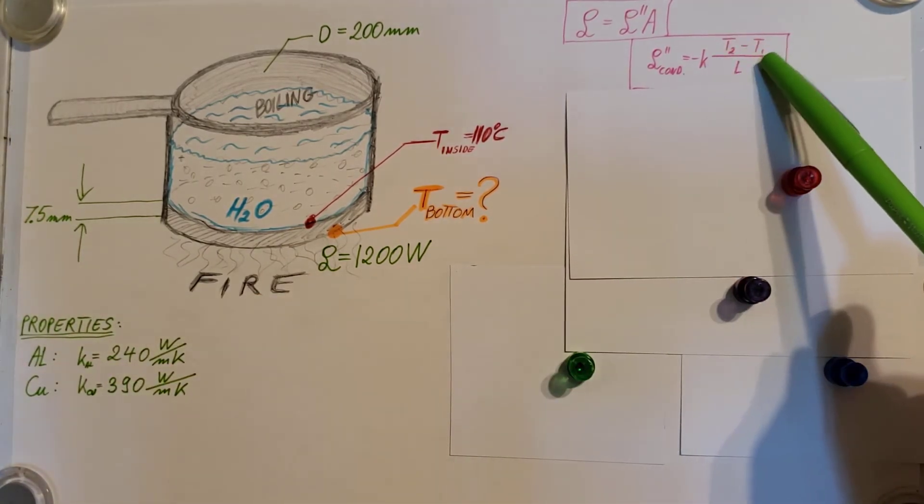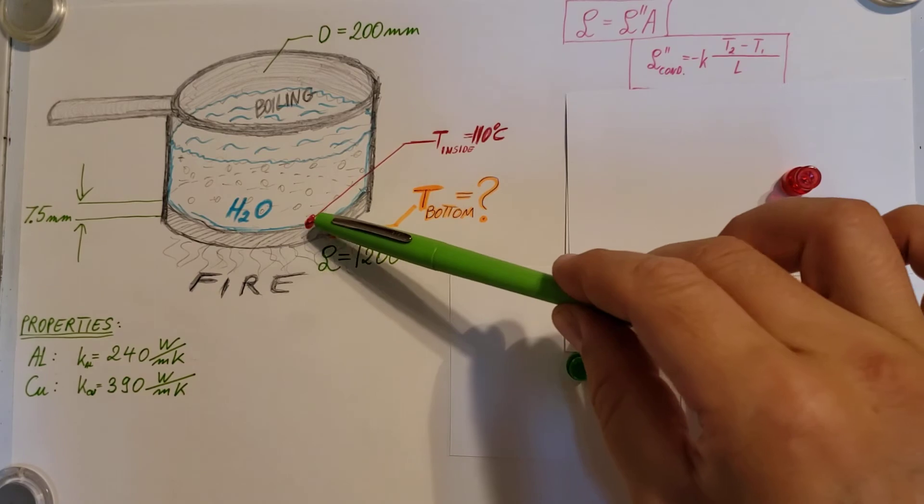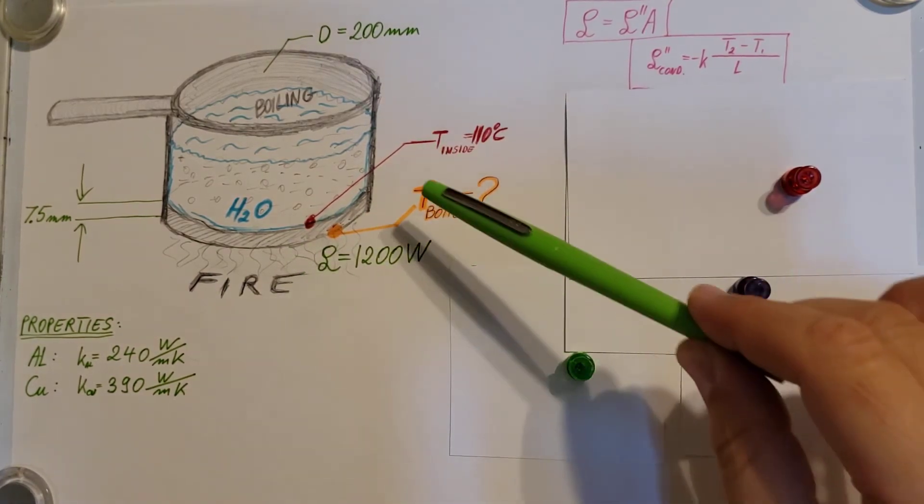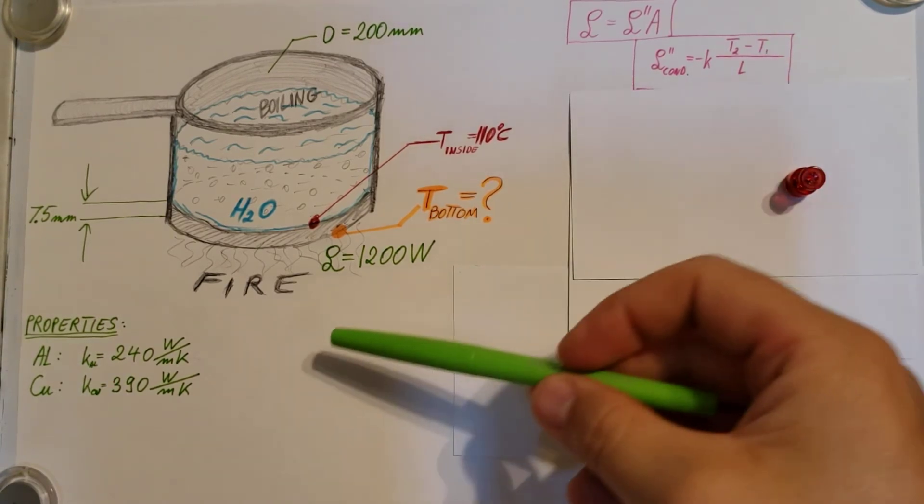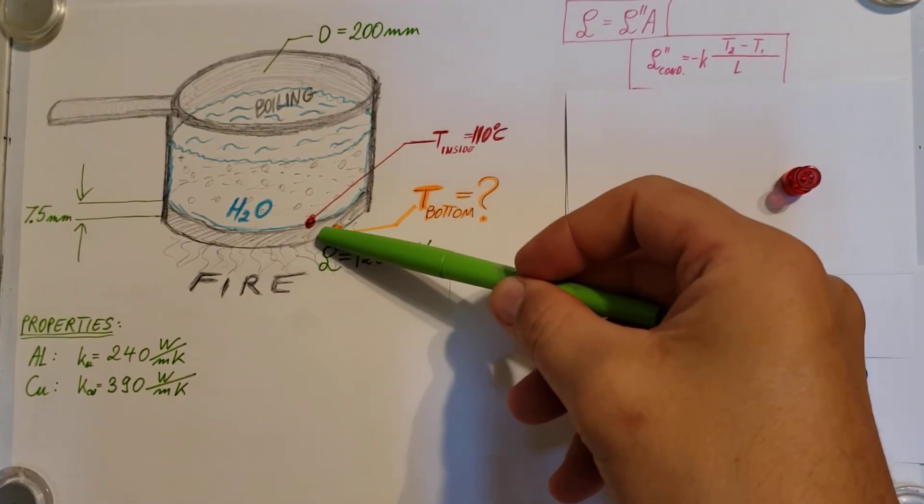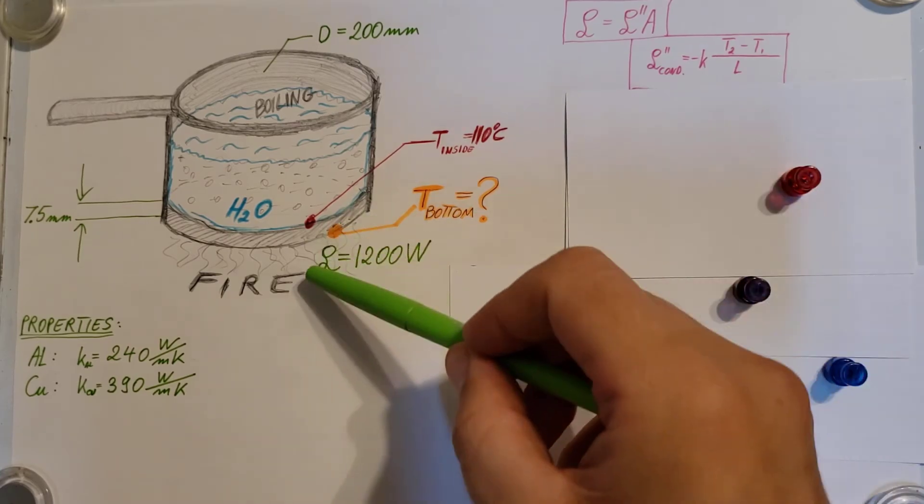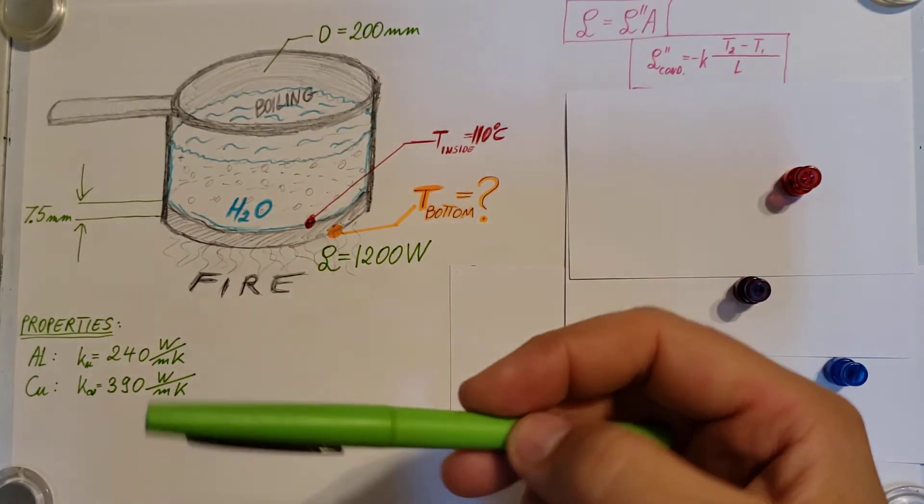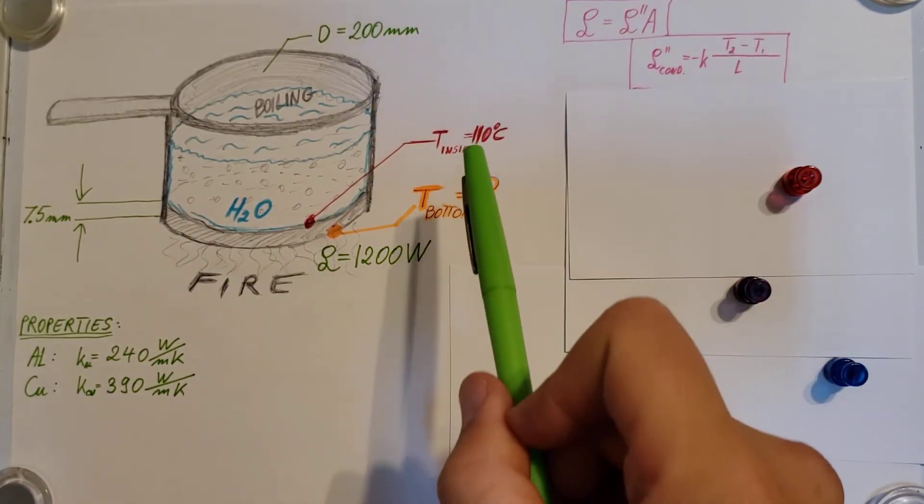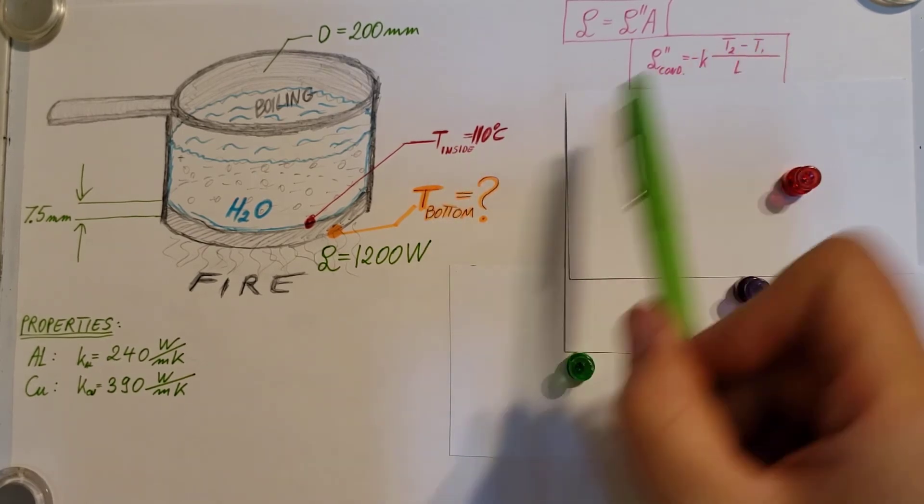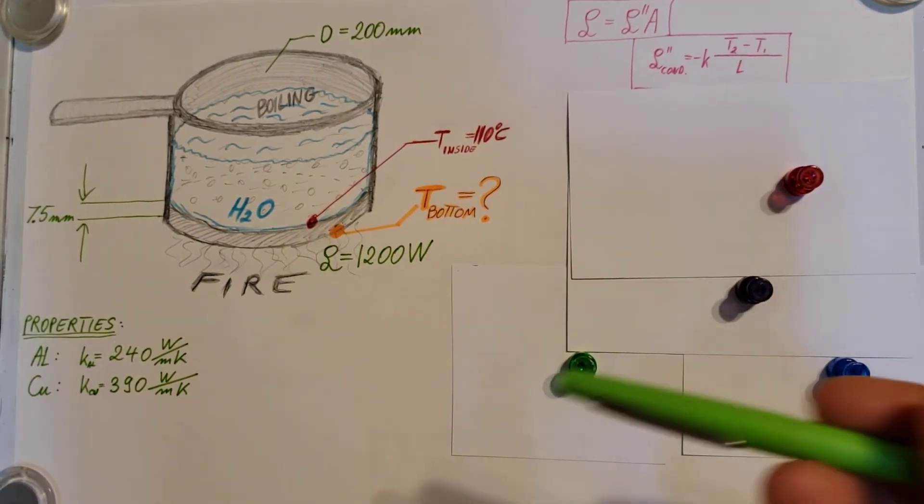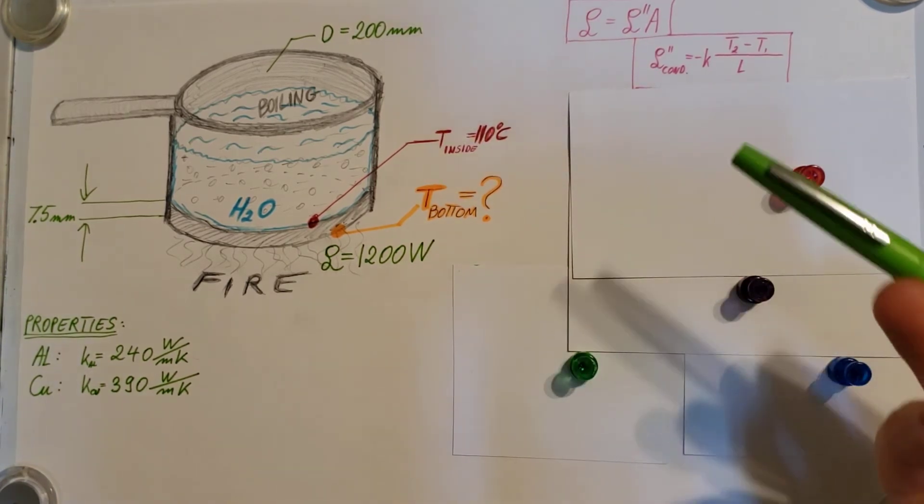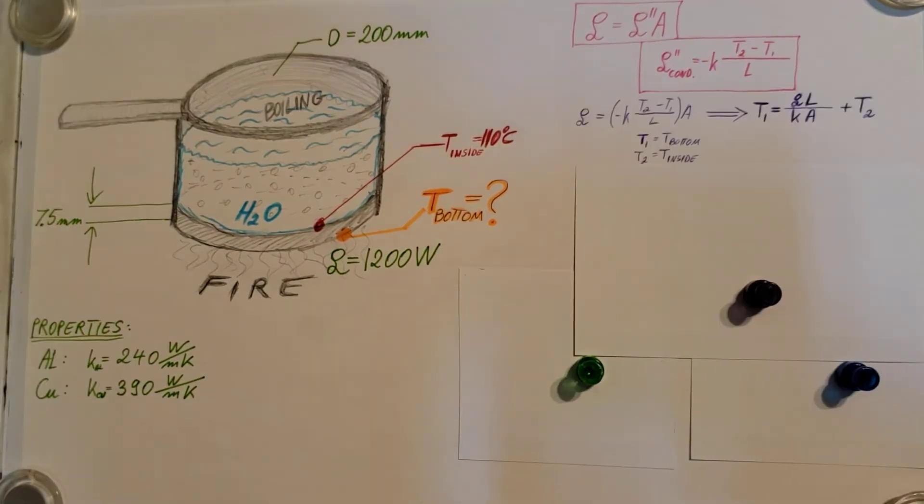T1 and T2, we're going to designate it right here. One is going to be the inside, one is going to be the bottom. T1 is where we start to go through the pan, T2 is where we arrive to the other side. So T2 will be our inside, and T1 will be our bottom. You can pick them the other way also, you're just going to get a negative value.